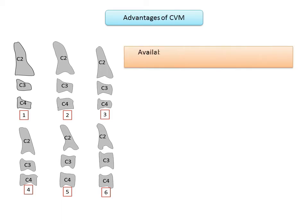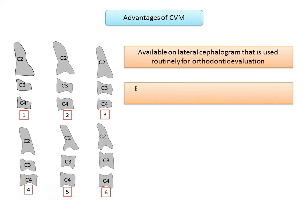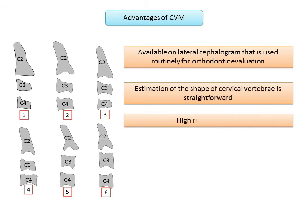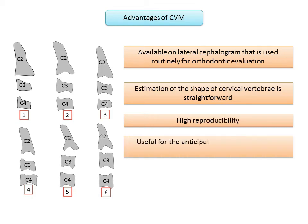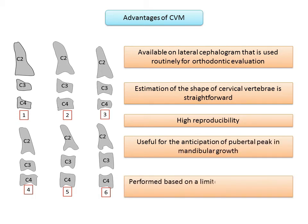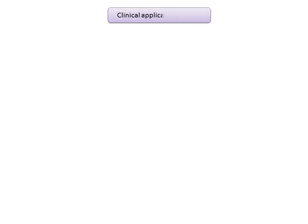The advantages of the CVM method include: the cervical vertebrae are available on the lateral cephalogram used routinely for orthodontic diagnosis and treatment planning; estimation of cervical vertebral shape is straightforward; reproducibility of classifying the CVM stages is quite high; the method is useful for anticipating the pubertal peak in mandibular growth; and only a limited number of vertebral bodies — C2, C3, and C4 — are needed to perform the staging.